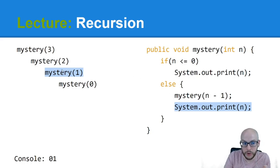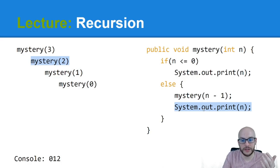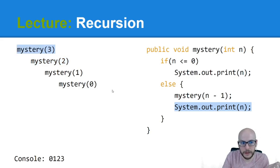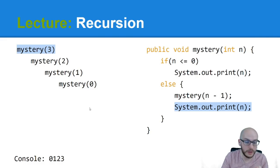I jump back to mystery(1) because it had code waiting to be executed — inside that call n was one, so we print one. Back to mystery(2) — in that call n is two, we print two. Lastly, still on the stack, mystery(3) — n is three, it shows up in the console, and our stack has fully collapsed. So the output is 0, 1, 2, 3 — because of how the stack unwinds after hitting the base case.